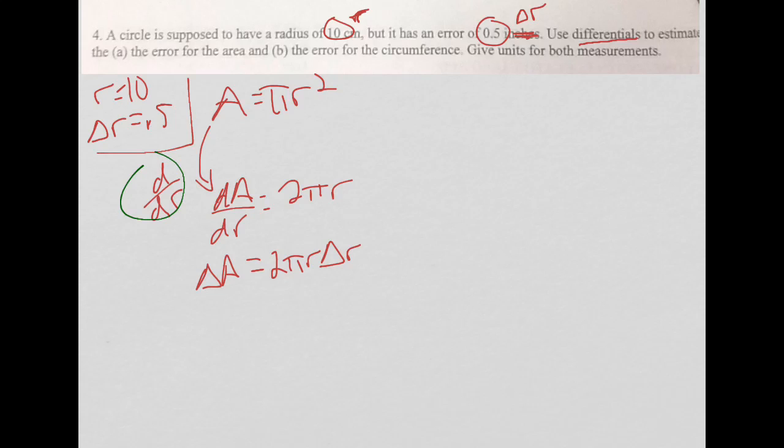And now I just plug in my values that I wrote over here. So delta A is approximately 2 pi times 10 times 0.5. I can do 2 times 0.5, and they cancel each other out, which gives me 10 pi. So that would be the error plus or minus on that area.